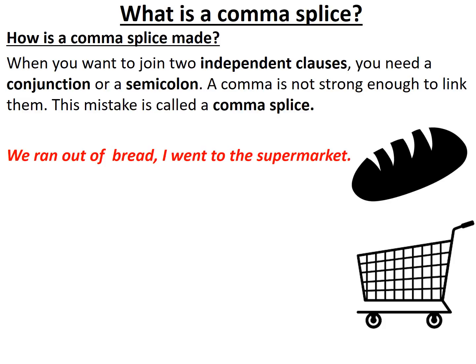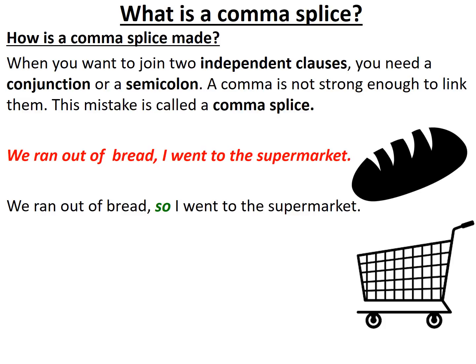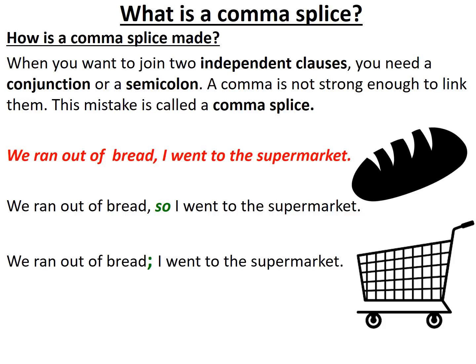The sentence in red is incorrect because I'm joining two independent clauses with just a comma. I should have either used a conjunction — such as 'We ran out of bread, so I went to the supermarket' — or injected a semicolon, which is stronger than a comma: 'We ran out of bread; I went to the supermarket.'